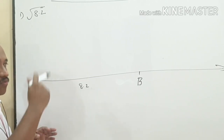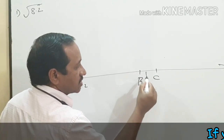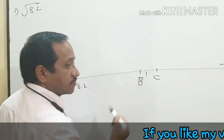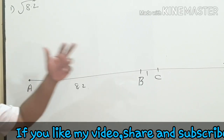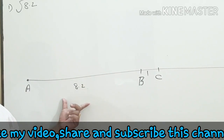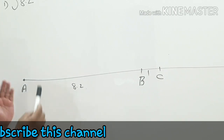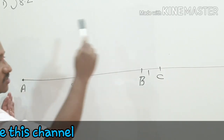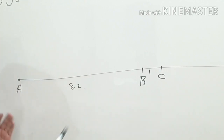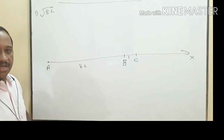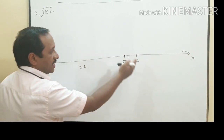From B, mark another point C which is one unit. That means from A to B it is 8.2 units, and B to C is one unit. So total AC is equal to 8.2 plus 1, which is 9.2 units. The next step is to find the midpoint of AC.